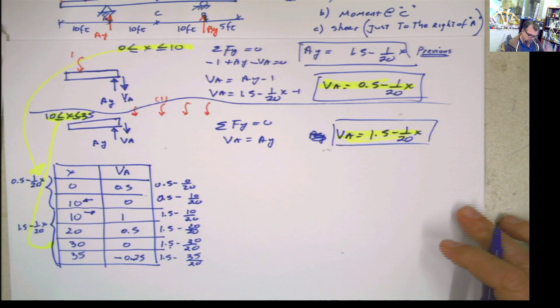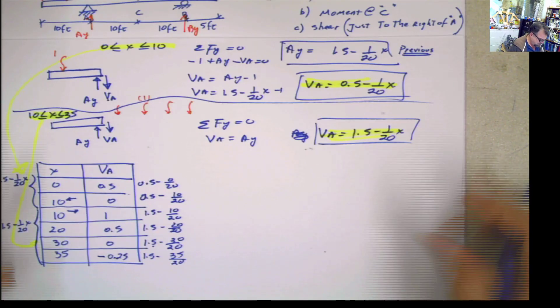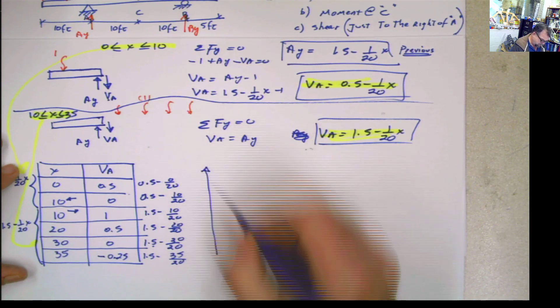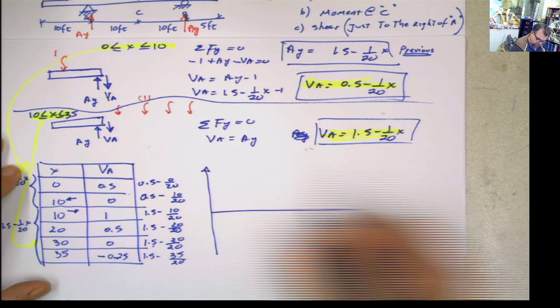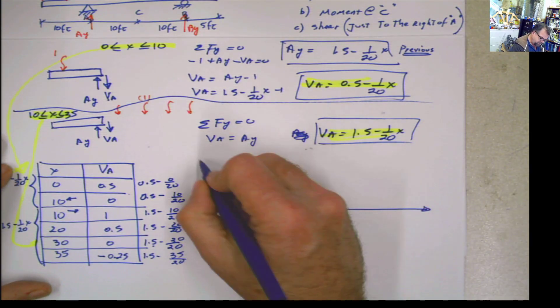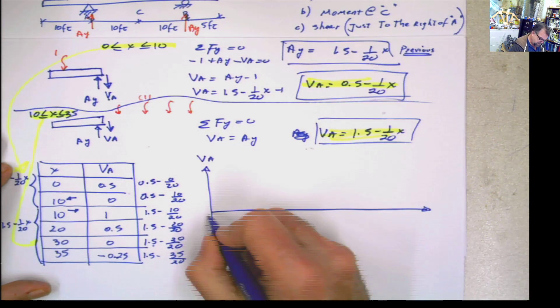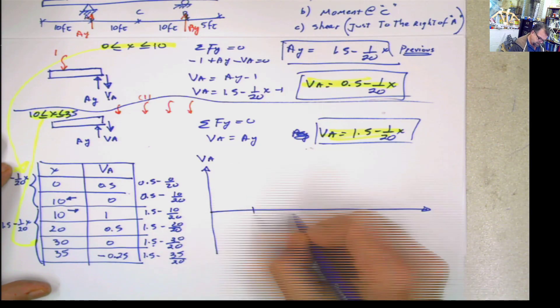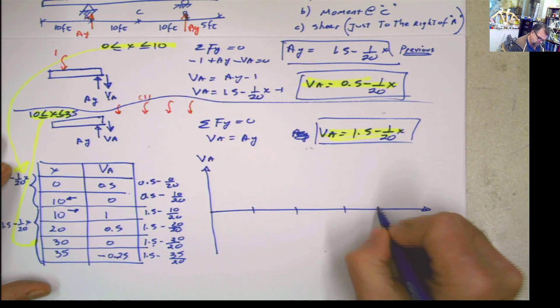Now what do we do? We plot. Watch for tree. There you go, plot. This is Va. This is 0, 10, 20, 30, 35.